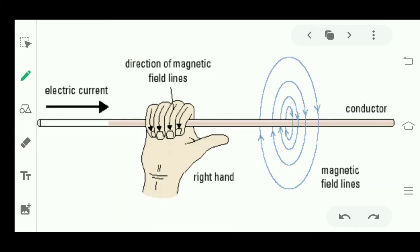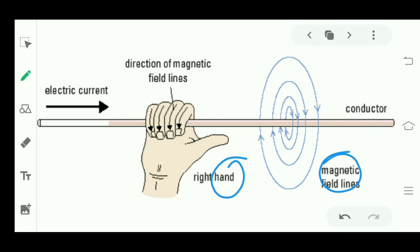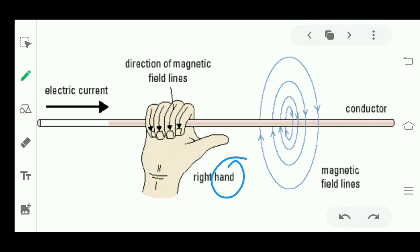The magnetic field lines are circular here. I did an experiment where I took a magnetic compass and kept it near the conductor — it deflected immediately. But when I kept the compass away from the conductor, away from the magnetic field lines, it deflected slowly and only a little. This is because magnetic field lines are stronger near the conductor and weaker farther away.